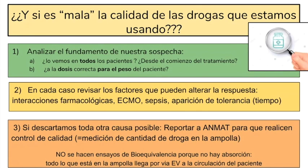Analicemos: ¿lo vemos con todos los pacientes o nos pasó con uno que justo estaba en ECMO, en shock séptico, o que lleva 5 días con el relajante? Revisemos la dosis: ¿pesa 85 kilos? No le va a hacer el mismo efecto esa dosis que a un paciente de 60 kilos — revisemos la dosis kilo-minuto. Revisemos los factores que alteran la respuesta: ECMO, sepsis, tiempo transcurrido. Recién si descartamos todas estas causas y nos pasa con todos los pacientes, uno podría sospechar de un problema con el medicamento y reportarlo a ANMAT para que realicen el control de calidad.